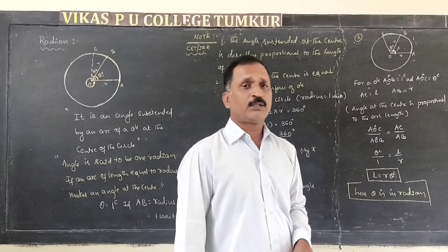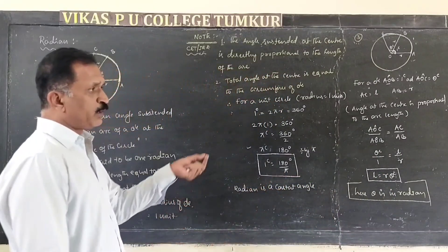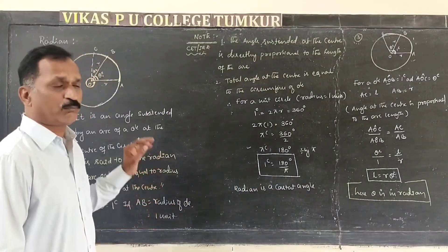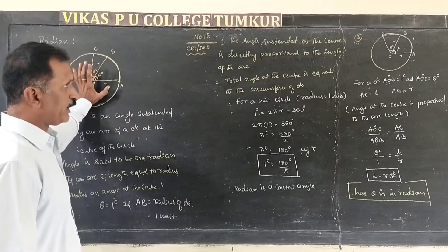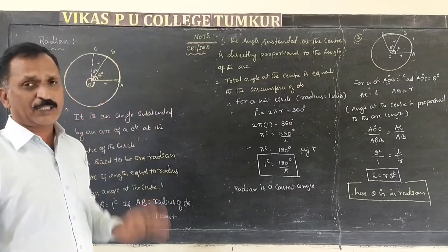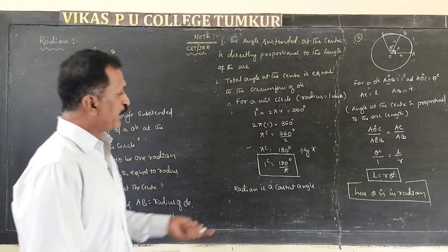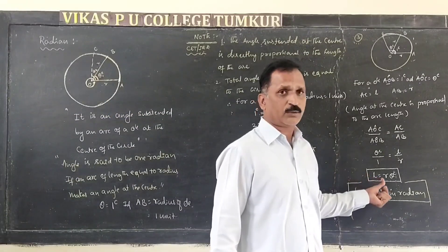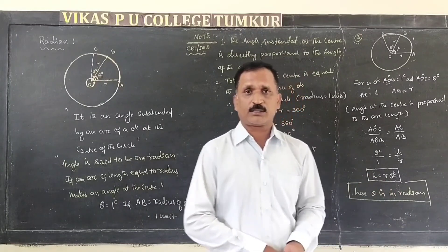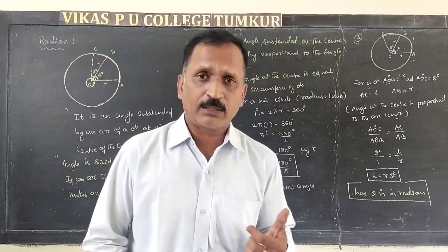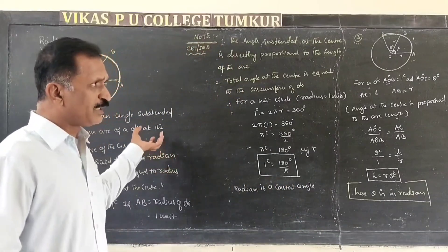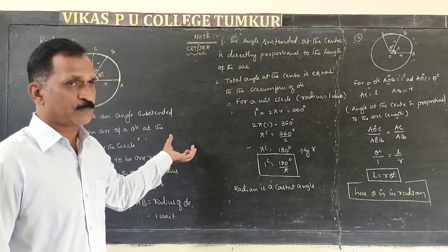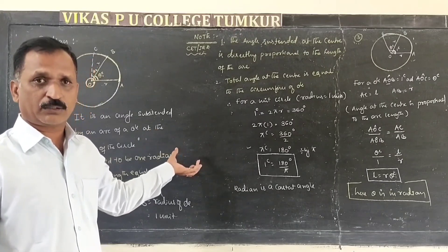This is very important for solving problems. The key points from radian measurement are: the definition of radian, one radian, and three important results — π radians equals 180 degrees, and the arc length L equals r times theta. In the next session, I will cover a few more concepts on radian measurement. Thank you.